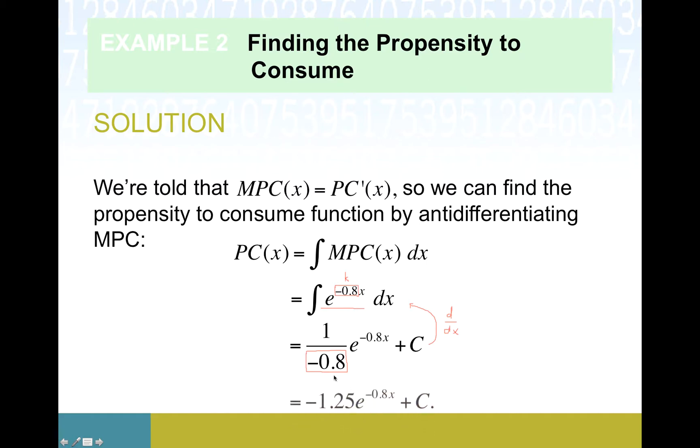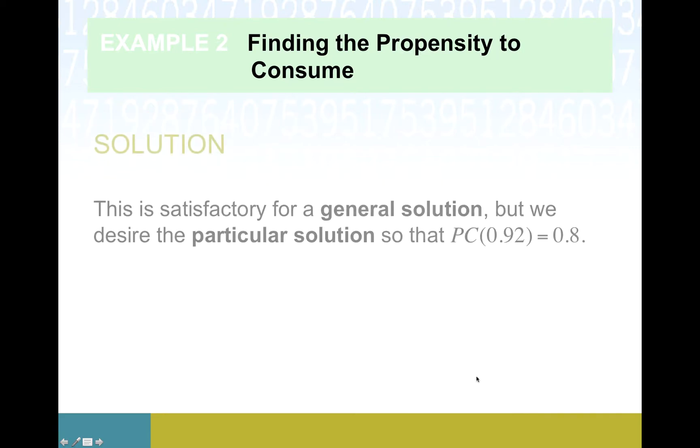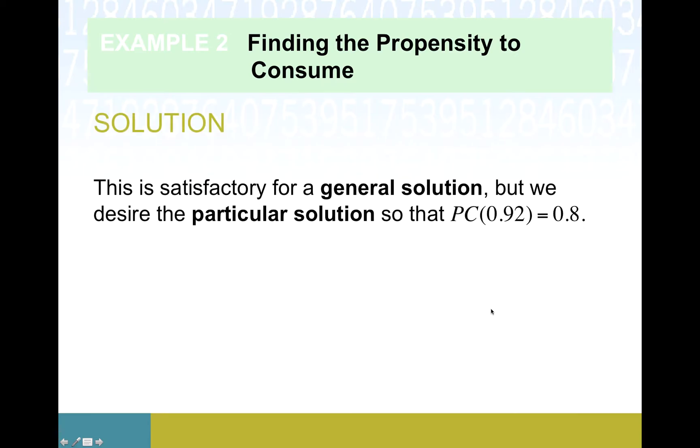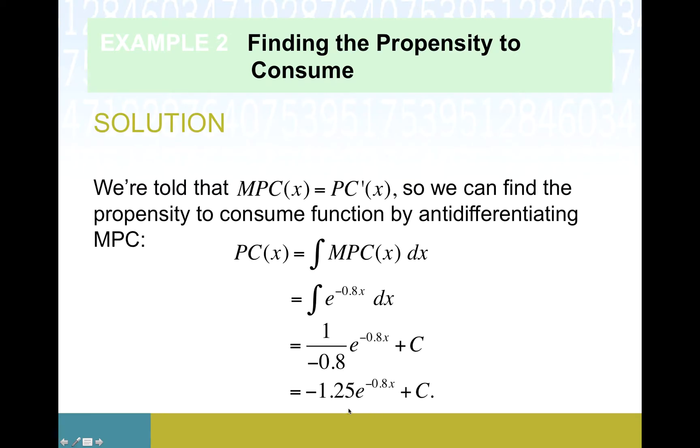Okay, just a tiny little bit of tidying. 1 over negative 0.8 is, I'm hoping, negative 1.25. So everything else is staying the same, we just kind of tidy the fraction. So what we found is, maybe I'll stay there for just a sec, this is a formula.